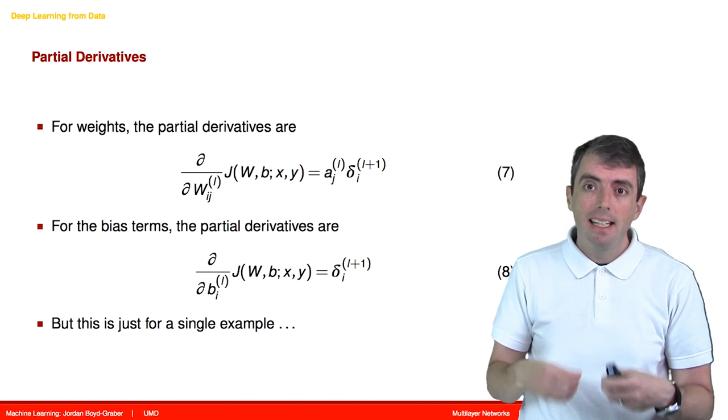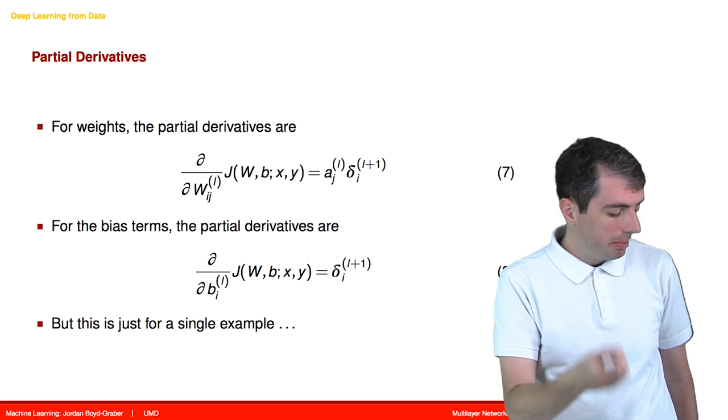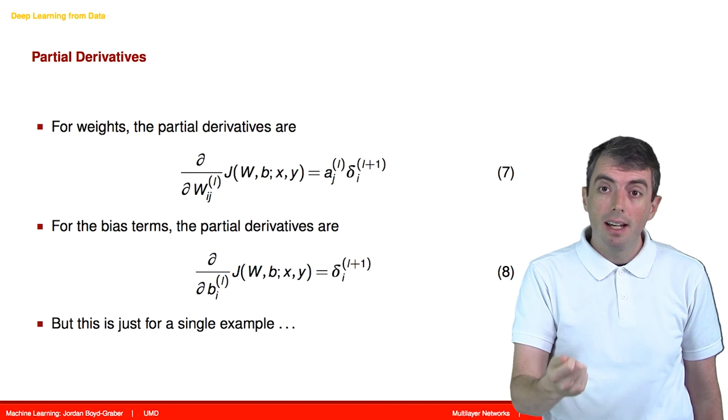Once we've defined this notion of a mistake inside the network, it's quite simple to figure out how we should update our weights and biases. The weights get multiplied by the node's activations.